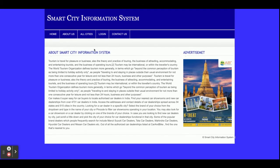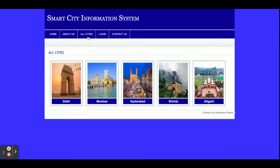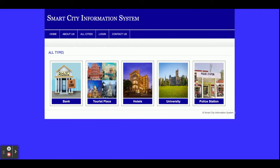This is the All Cities page — all of the cities available in the database will be rendered here. You can add any number of cities; currently we have added five cities. If you click on a city you will get all of the page details. This is also a fully dynamic page — you can add this information from the backend.